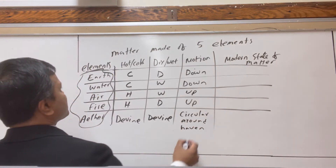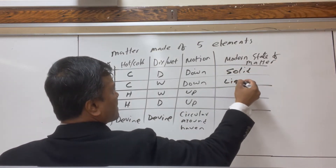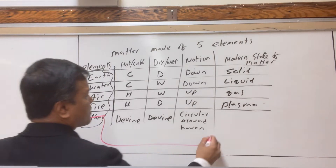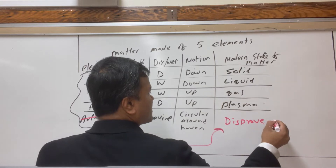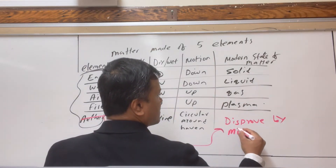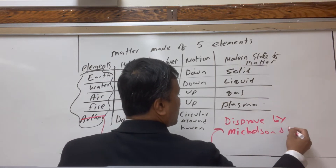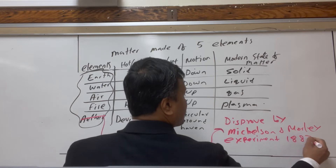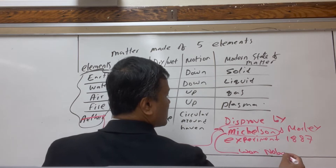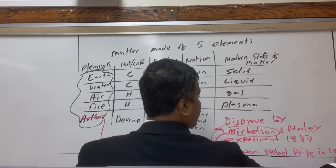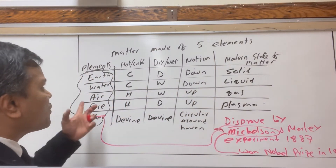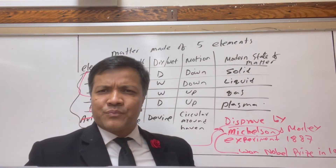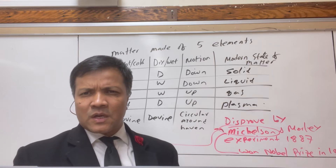The modern states of matter are: solid, liquid, gas, and plasma. The existence of ether was disproved by the Michelson-Morley experiment in 1887, and Michelson won the Nobel Prize in 1907 for his discovery. We no longer believe that matter is made of these five elements — matter consists of the elements in the periodic table.